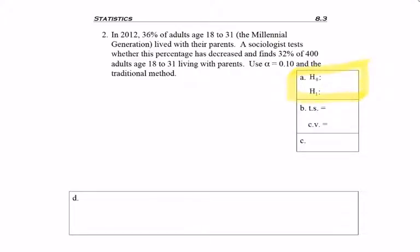So first thing we need to do is find H0 and H1. Now normally there's the phrase test the claim that, and the word claim does not show up anywhere in this paragraph, but it does say a sociologist tests. So this is what she's challenging, and she tests whether the percentage, so we're dealing with P, has decreased, so we'll be using less than. Be careful, because as we go to fill everything in, the next number you see is 32%, but that's not the number I'm going to be listing.